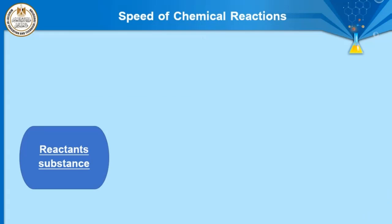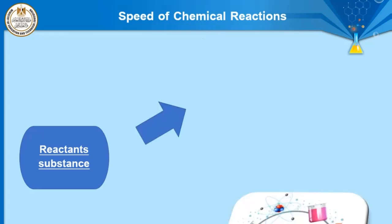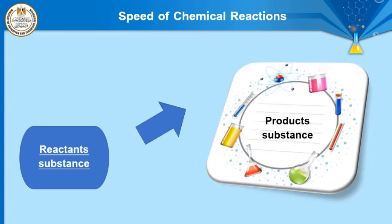We know that any chemical reaction consists of reactant substances and product substances. For example, in the chemical reaction between magnesium and oxygen, magnesium and oxygen are called reactant substances, and they produce magnesium oxide, which is called the product.